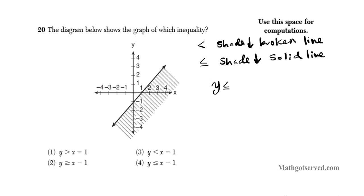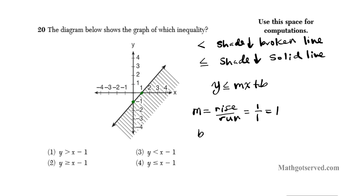So what is m and what is b? The slope is rise over run — we pick two nice points on the line and move from left to right. We rise one and run one, so our slope is 1. The y-intercept b is where the graph intersects the y-axis, which is at negative one. So substituting these values into the linear inequality, we have y is less than or equal to 1 times x plus negative one, simplifying to y is less than or equal to x minus one. The answer is option number 4.